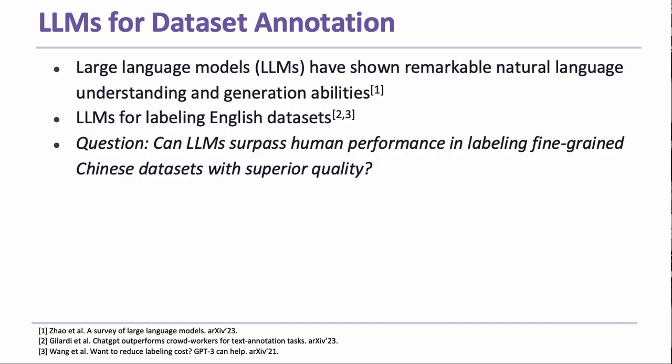Large language models have shown remarkable natural language understanding and generation abilities in recent years. For example, models such as GPT-4 can understand and generate text according to human instructions. Large language models have been used to label English datasets in previous works. However, using large language models for labeling Chinese datasets is underexplored. So this raises the question: can a large language model match human performance in labeling fine-grained Chinese datasets with superior quality?